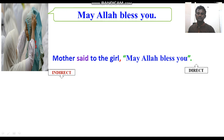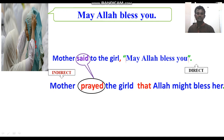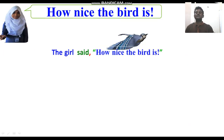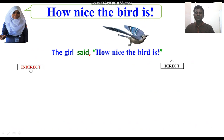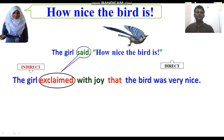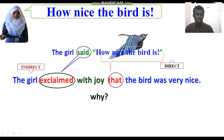'Mother said to the girl, may Allah bless you' becomes 'Mother prayed for the girl.' Why 'prayed'? Because 'may Allah bless you' is a prayer. That is why 'said' becomes 'prayed' and the reported speech is replaced with 'that'. 'How nice the bird is' — 'the girl exclaimed with joy that the bird was very nice.'